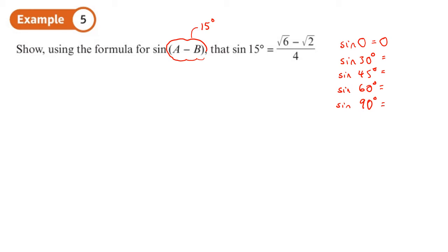Sine 30 we should know is a half. Sine 45 is 1 over root 2 or root 2 over 2. Sine 60 is root 3 over 2, and sine 90 is 1. So we want to pick two of those angles where they've got a difference of 15. I could do 60 and 45, or I could do sine 45 minus 30.